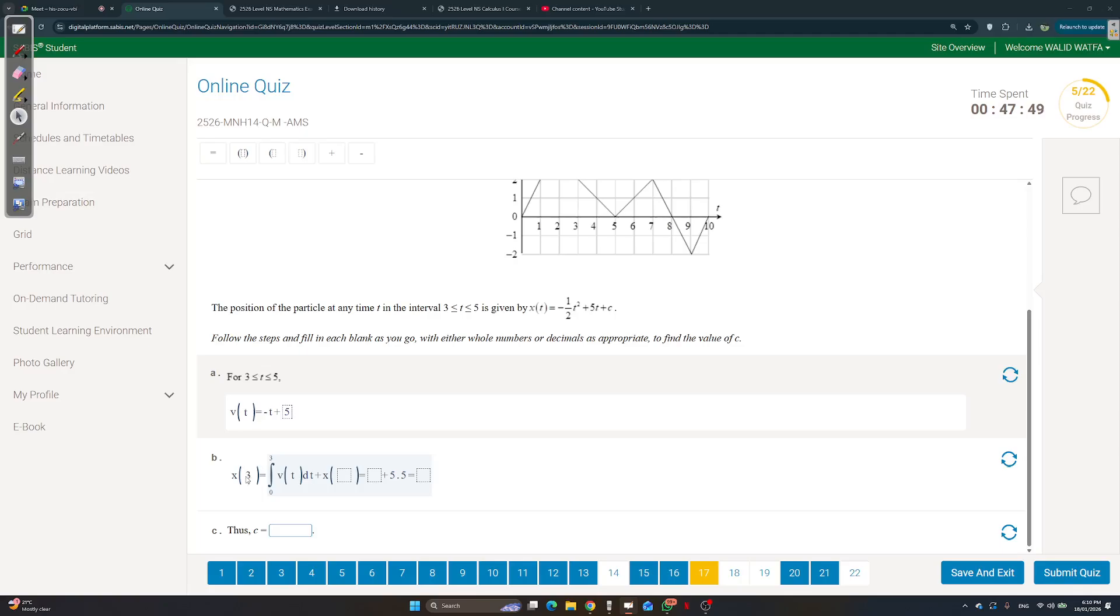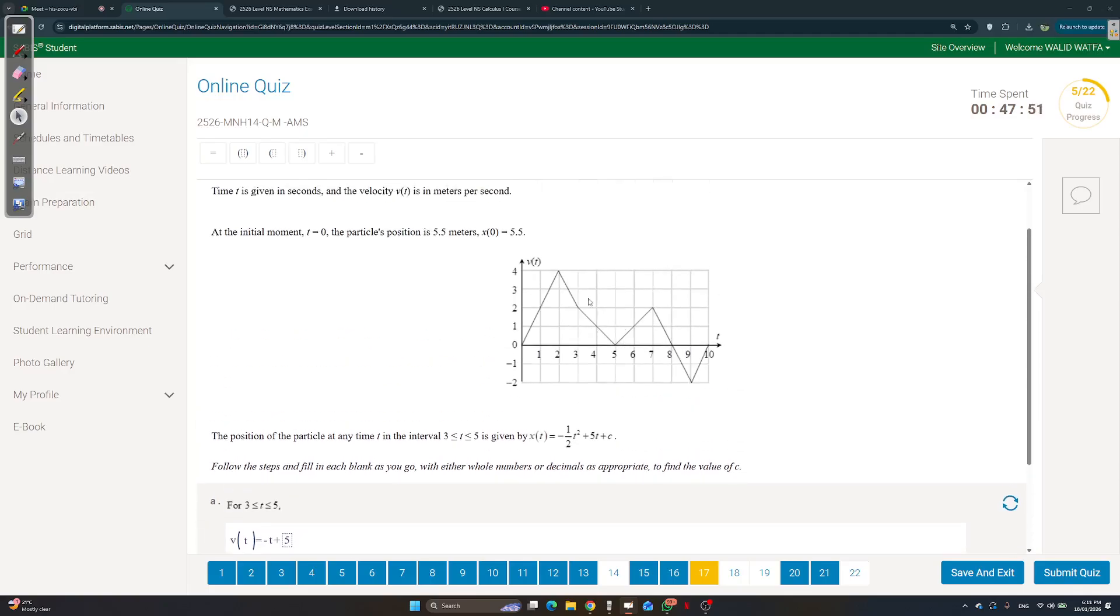Part b they're saying is what is the position at 3, not between 3 and 5, exactly at 3. So what's the position over here? Isn't the position over here the area that has been traveled under the v graph? Yes.